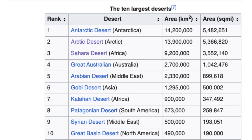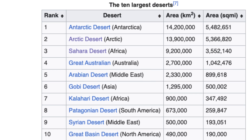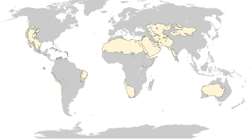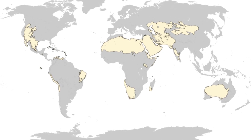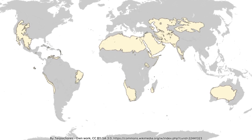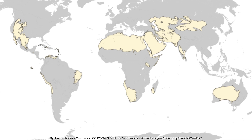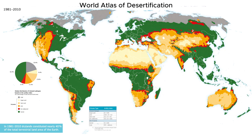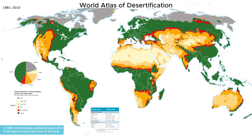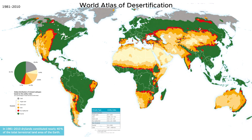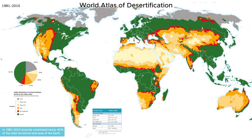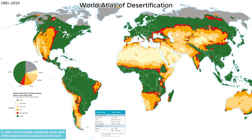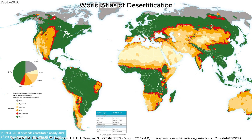Deserts form for a range of reasons including their geographical location, atmospheric circulation patterns, and unique regional conditions. Understanding why deserts lack rain requires us to explore these underlying causes that shape each type of desert on Earth.